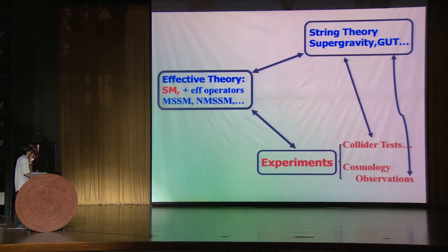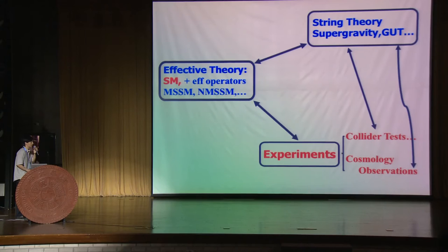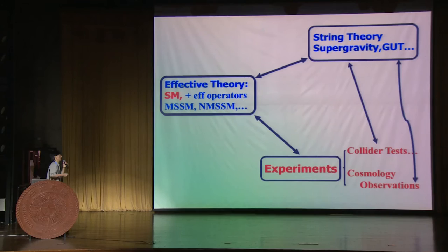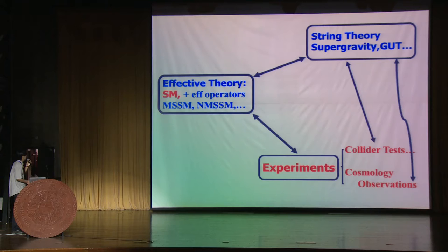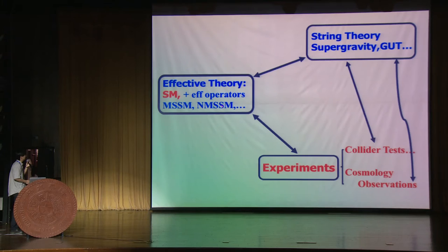Some possible new physics beyond the standard model includes the model-independent description by adding low-energy effective operators to describe new physics beyond the standard model. We have probably hundreds of new effective models for new physics, including popular ones like the Next-to-Minimal Supersymmetric Standard Model, or even further extensions. Some of these effective theories like the NMSSM could be embedded into a more complete UV theory at higher scales.